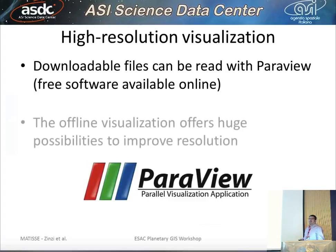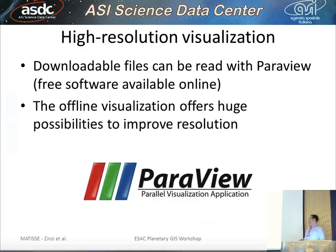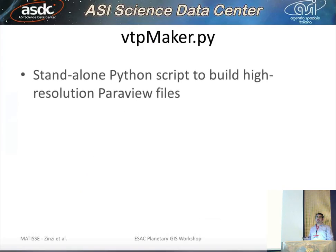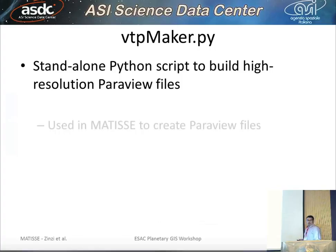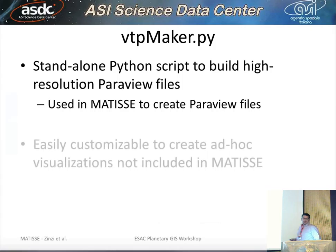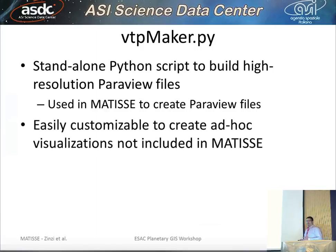The offline visualization allows very high resolution compared to web visualization. For example, we have the shape model of comet Churyumov-Gerasimenko with five million points. Apart from Matisse, we developed a Python script that we are planning to distribute as an executable in some months. It is a standalone script to build high-resolution ParaView files, included in Matisse but also usable independently.